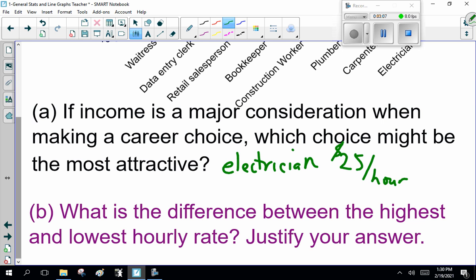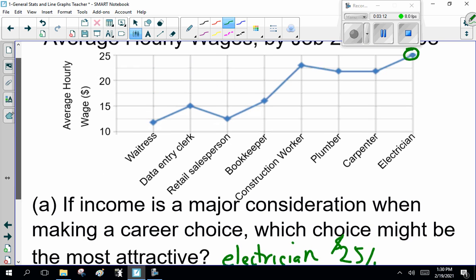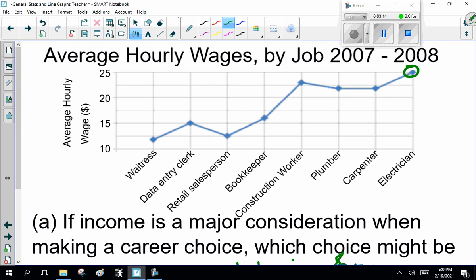Next question. What's the difference between the highest and lowest hourly rate? So what's the highest rate? An electrician, 30 an hour? What's the lowest rate? Looks like a waitress.